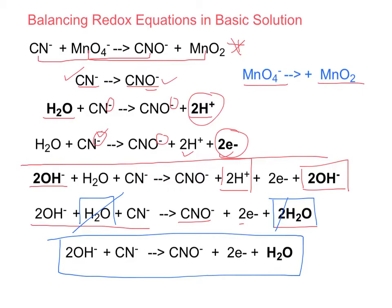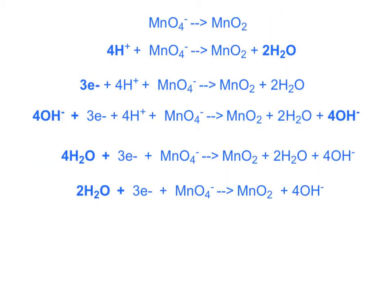Now we go to our second half reaction. We start out with MnO4- going to MnO2. Now we balance our oxygens and then our hydrogens. Since we have four oxygens on this side and two on that side, we need two water molecules added to our products. Because we added two water molecules, we have to add four H+ to our reactants.